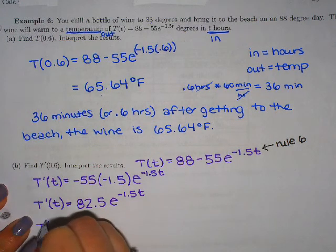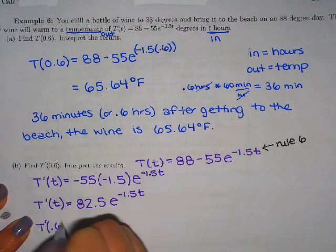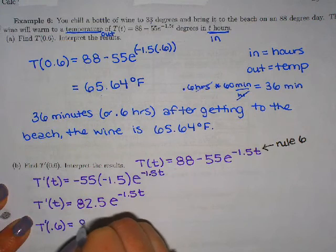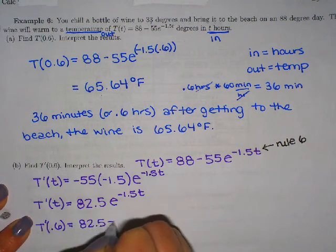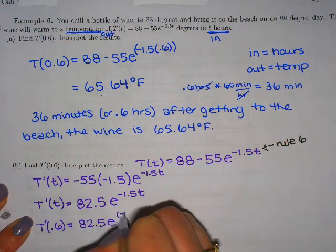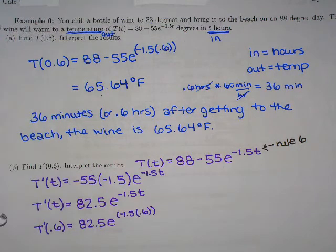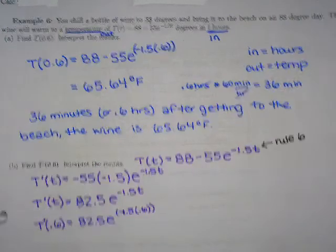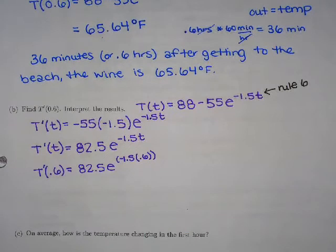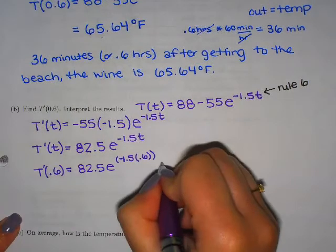And now we can plug in and see the rate of change for any hour. But it asks us t prime of 0.6. 82.5e to the negative 1.5 times 0.6, placing that t in there in parentheses. And you might need the whole power in parentheses depending upon your calculator.